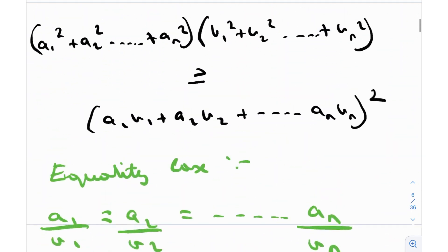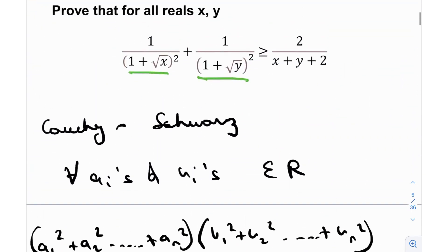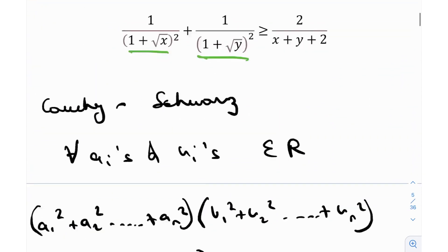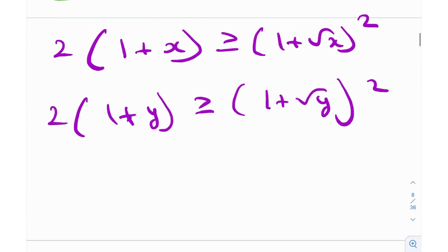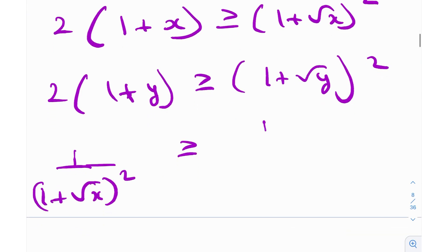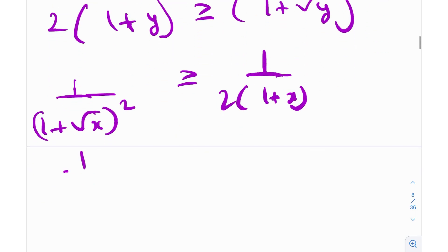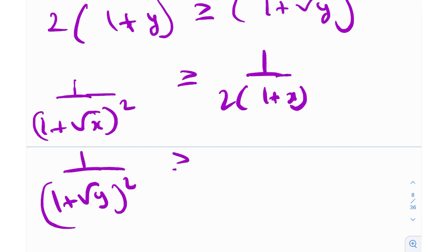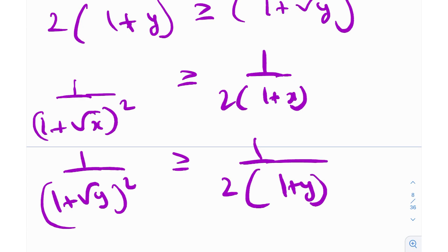In the original question we have 1/(1 + √x)². To get that, we flip the inequality: 1/(1 + √x)² ≥ 1/(2(1 + x)), and similarly 1/(1 + √y)² ≥ 1/(2(1 + y)).